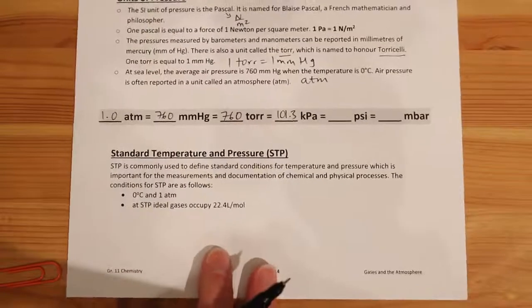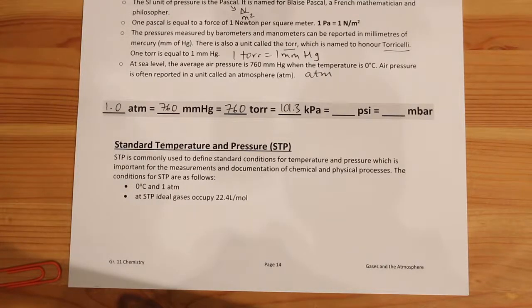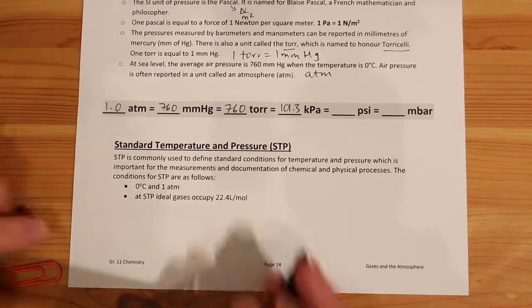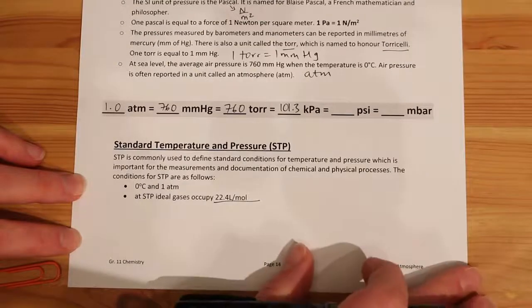In chemistry we often talk about standard temperature and pressure, abbreviated STP, so that results communicated with colleagues are reproducible. We define standard conditions as 0 degrees Celsius and 1 atmosphere of pressure. At STP, one mole of an ideal gas occupies 22.4 liters per mole — which is what we used in our stoichiometry unit.